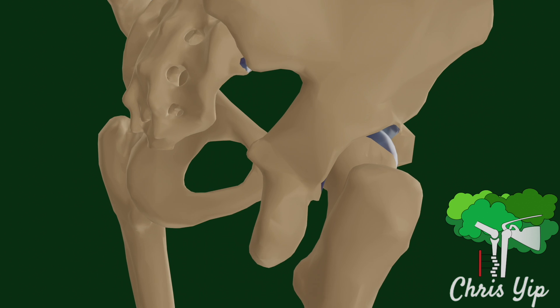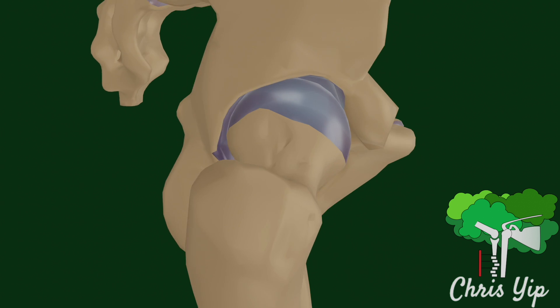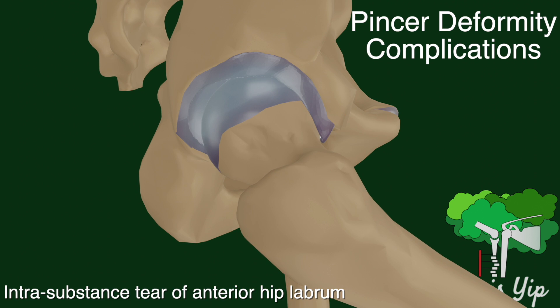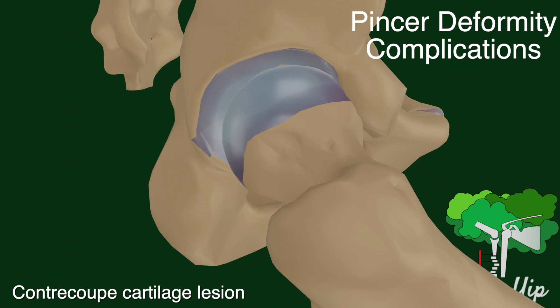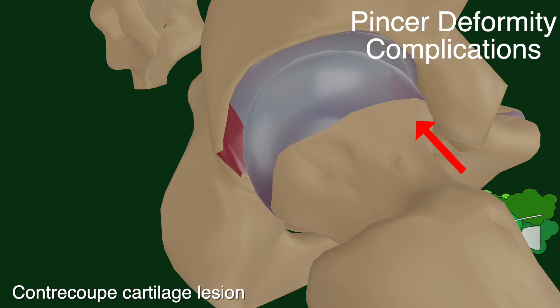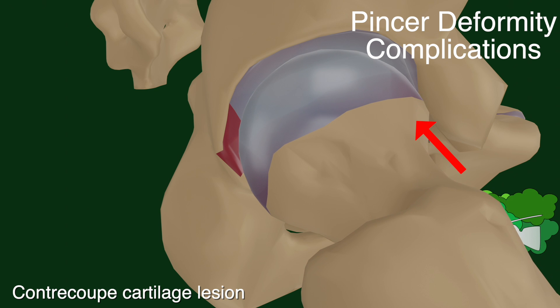This type of impingement is associated with complications such as an intrasubstance tear of the labrum, as the labrum sits at the point of contact in the anterior superior quadrant. There can also be a contrecoup cartilage lesion in the posterior inferior acetabulum, which is at the opposite pole to the impingement, because the anterior superior femoral head is levered against the acetabular overhang.